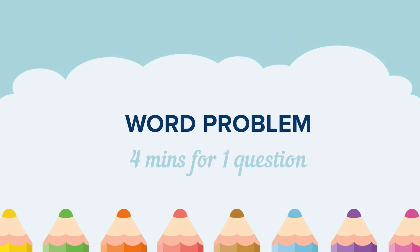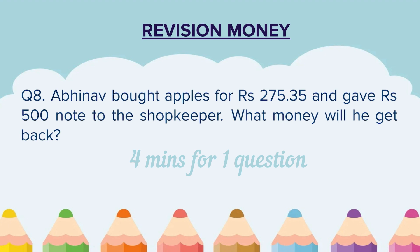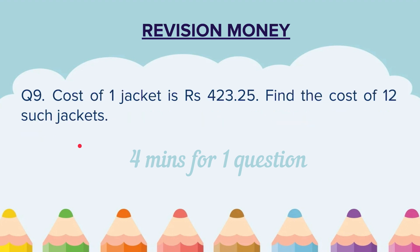Now we come to the category of word problems. Question 7: Reshma got a cash award of rupees 251.99 for maths and rupees 101.11 for arts. What is the total amount Reshma got? Question 8: Abhinav bought apples for rupees 275.35 and gave a rupees 500 note to the shopkeeper. What money will he get back? Question 9: The cost of one jacket is rupees 423.25. Find the cost of 12 such jackets.